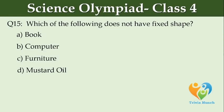Which of the following does not have a fixed shape? Option A: book. Option B: computer. Option C: furniture. Option D: mustard oil.